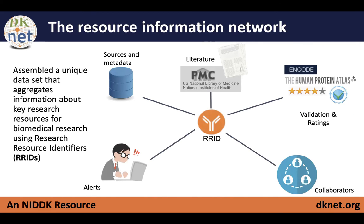The backbone of all this information about resources is that by pulling in information from resource authorities that exist out there, pulling information from the literature, and pulling information from other large projects that do validations and ratings — such as the Human Protein Atlas — which provide additional information about antibodies, we're able to assemble this unique dataset that aggregates all this information about key resources. What ties this all together is the research resource identifiers.